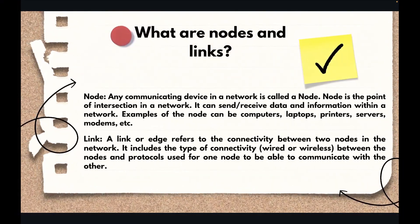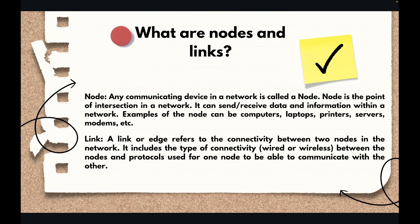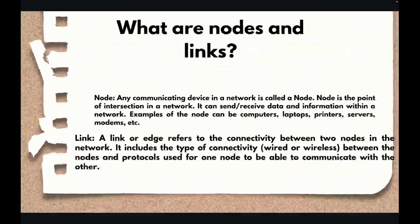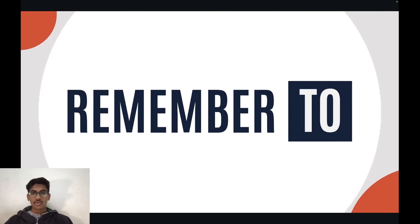The next question is: what are nodes and links? Nodes are the communicating devices, and links are the edges that connect different devices between two nodes. The following question is: what is network topology? Network topology is the physical layout of a network connecting different nodes using links, defining the connectivity between computer devices and cables. Common types include bus topology and star topology.